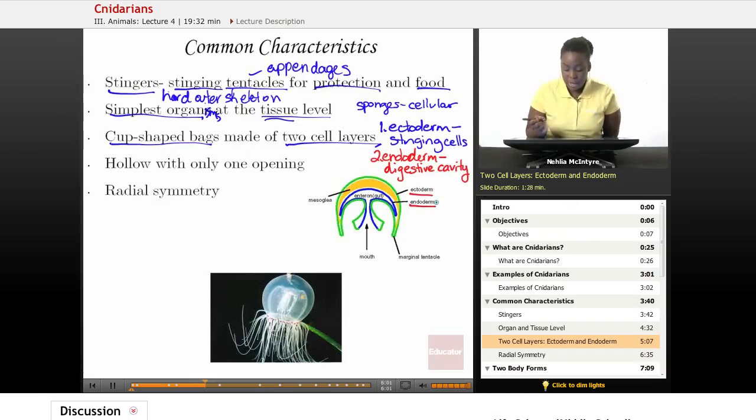Here's a diagram. The green outer layer would be the ectoderm, and then this blue inner layer here would be the endoderm. Now, as you can tell from this diagram, the Cnidarian has one opening. It's a hollow with only one opening, and that opening would be considered the mouth, but also waste materials can come out of that same opening.